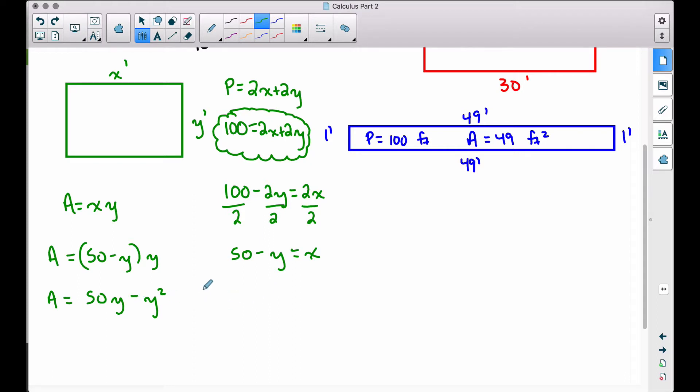Whenever the leading coefficient of a quadratic function is negative, you're going to have a maximum because that parabola is opening down. Let's find the derivative, a prime is equal to 50 minus 2y. And let's set this derivative equal to 0. This is what you're going to be doing with a lot of optimization problems. You're going to be finding a derivative of some function, and you're going to be setting it equal to 0. So setting our a prime equal to 0, we can subtract 50 and divide by negative 2, giving us a y value of 25.